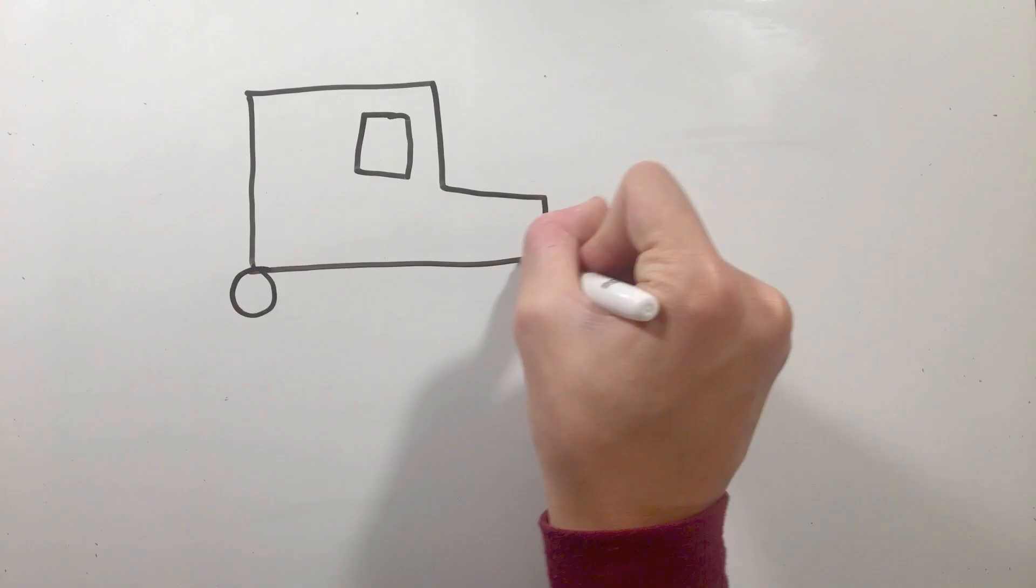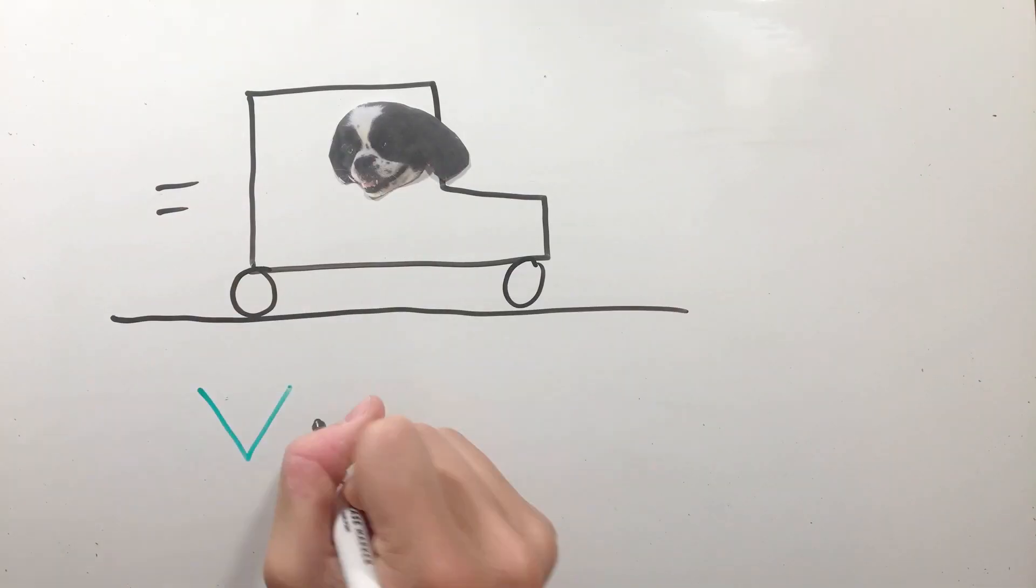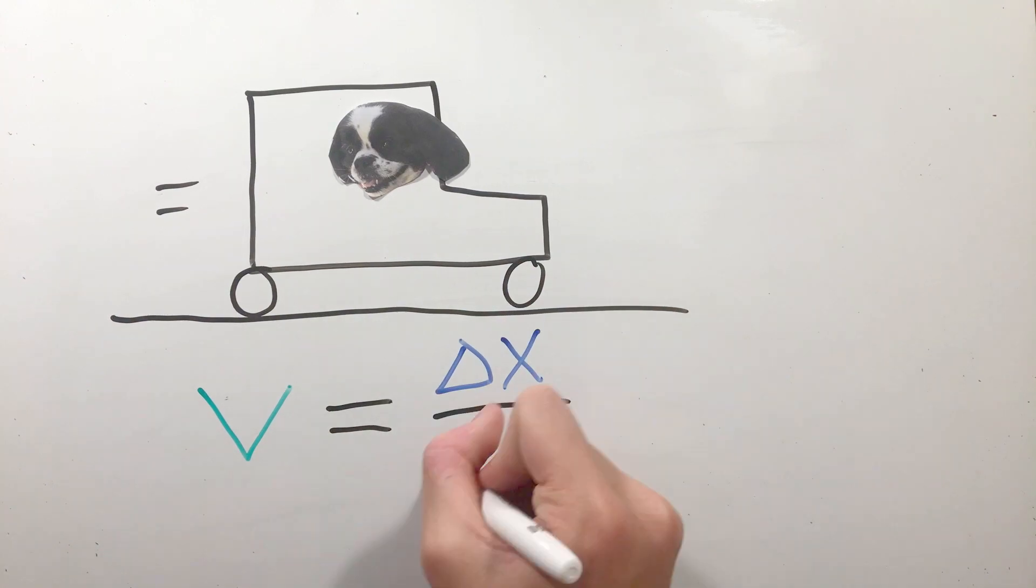The change in position over a period of time, or displacement divided by change in time, is what's known as velocity, or v.